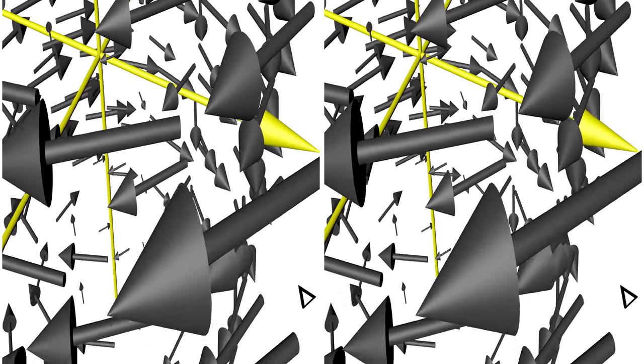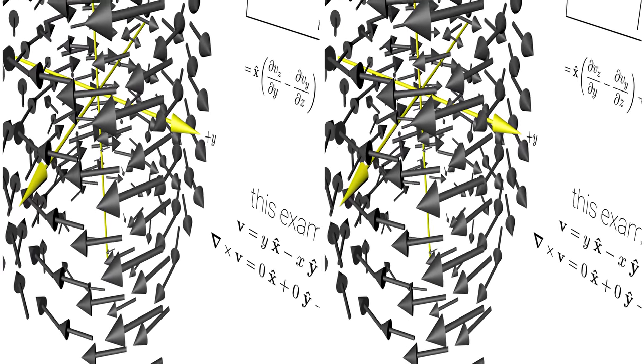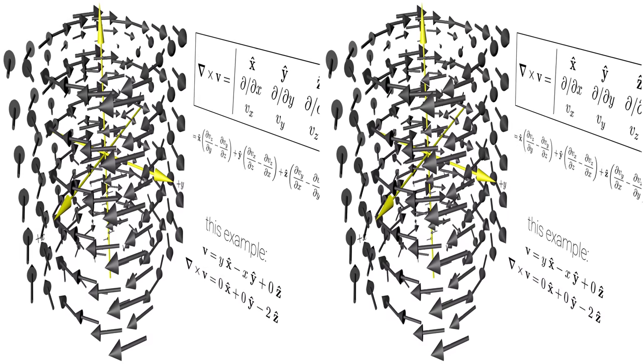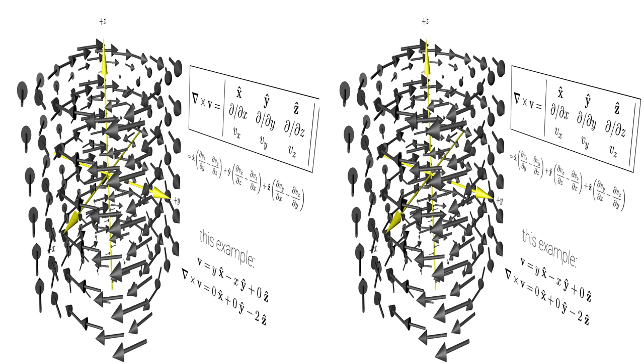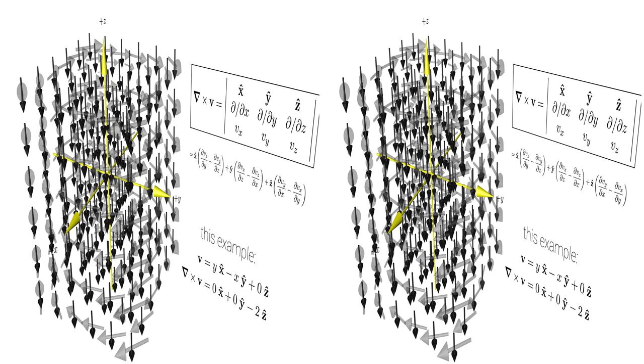The curl of a vector field is a measure of the extent to which the field curls around the point in question. It is calculated by taking the outer product of nabla with the vector field. Note that this produces another vector field.